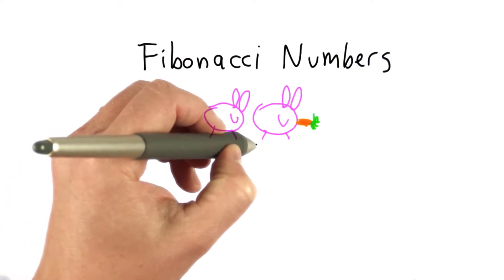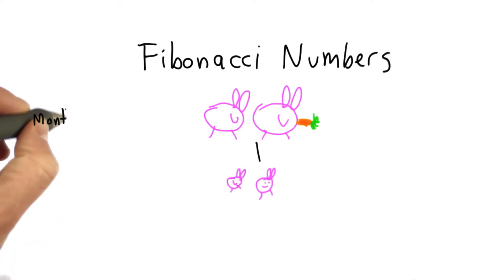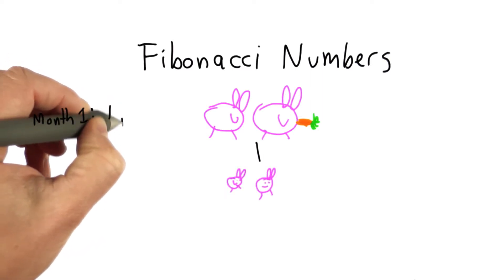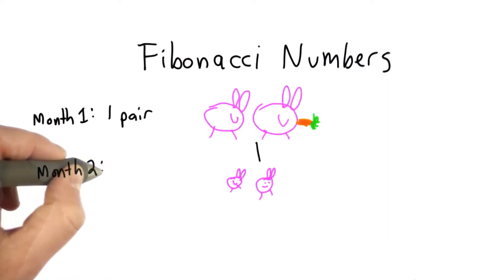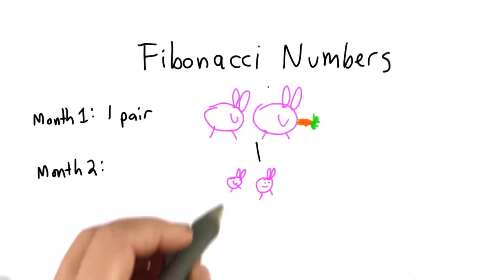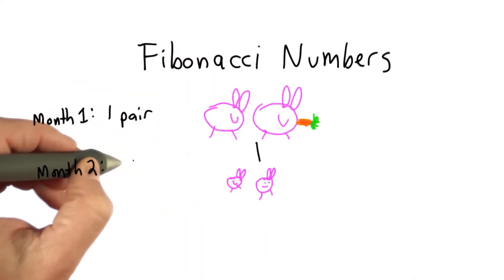At month one, we had one pair of rabbits. At month two, we have the one pair we started with, and now we have a new pair. We have two pairs of rabbits.